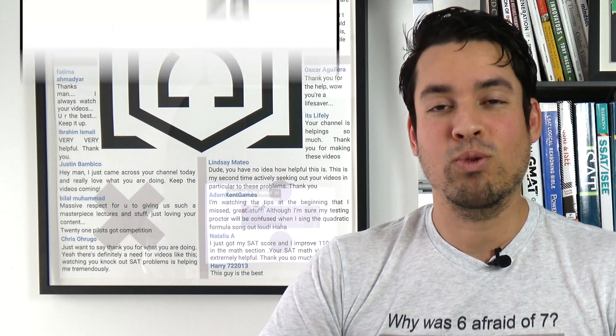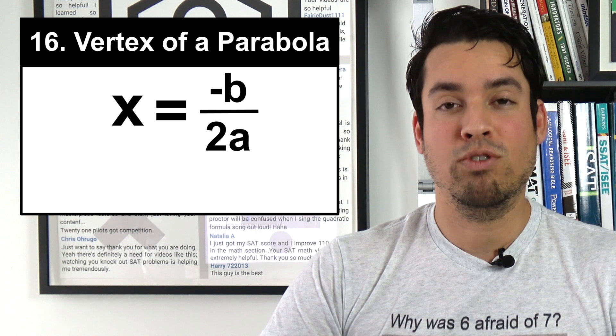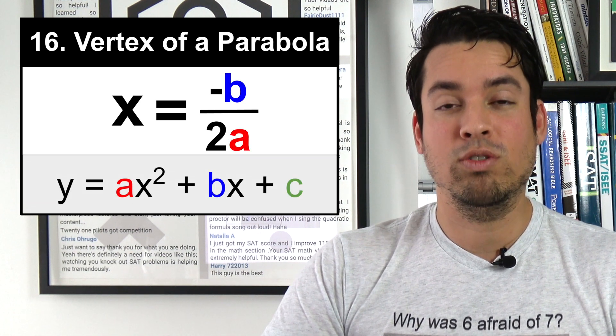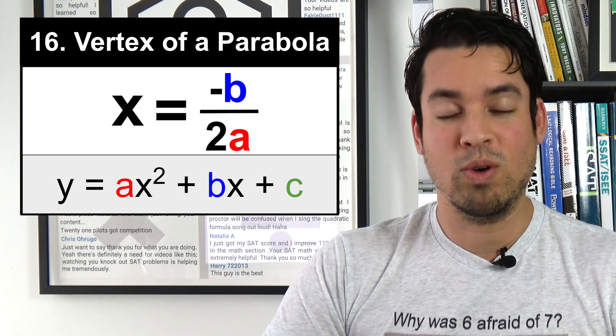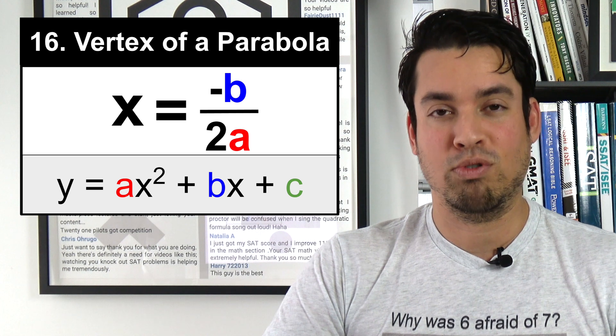Next on the list we have the formula for the vertex of a parabola, which is simply negative b over 2a. So if you have a quadratic in that nice standard formula, you simply take negative b over 2a and that will give you the x value of the vertex of the parabola.